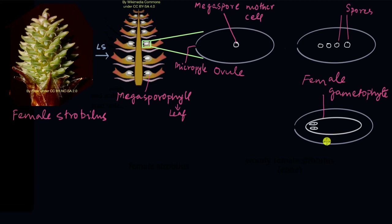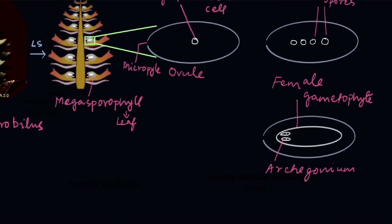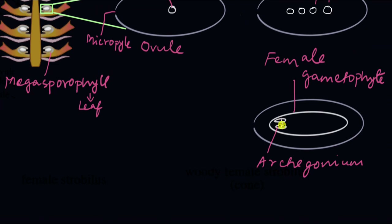Inside the female gametophyte you can see two smaller structures called the archegonia (singular: archegonium; plural: archegonia). Inside each archegonium there are tiny structures — these are the eggs. There is an egg in each archegonium.